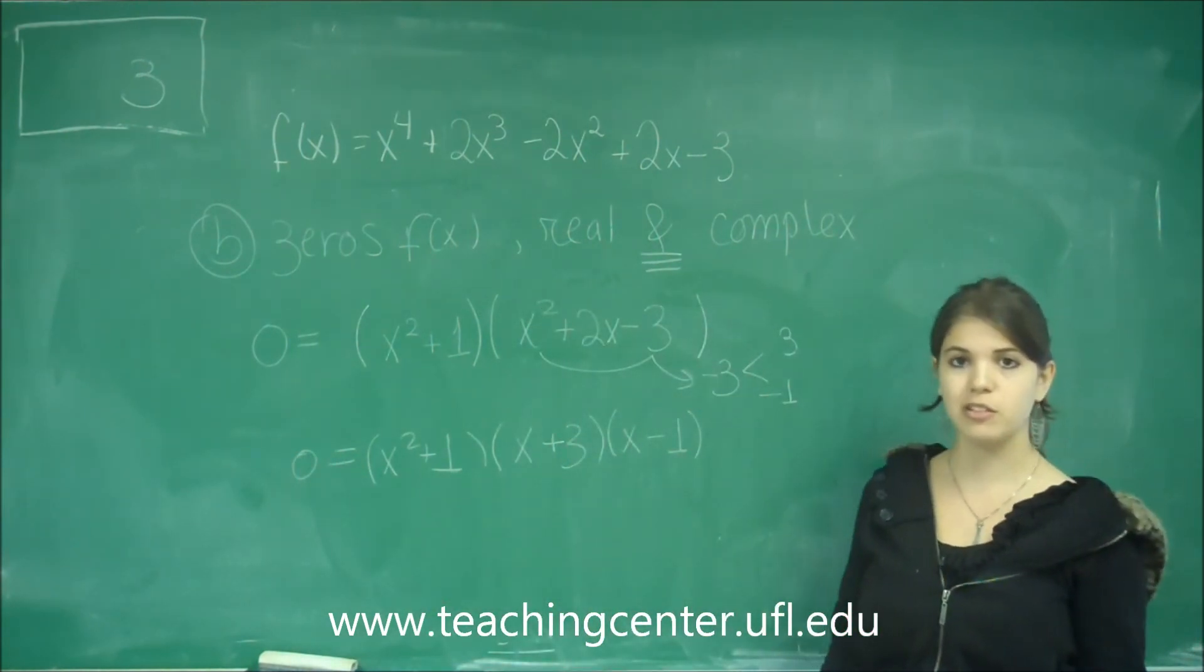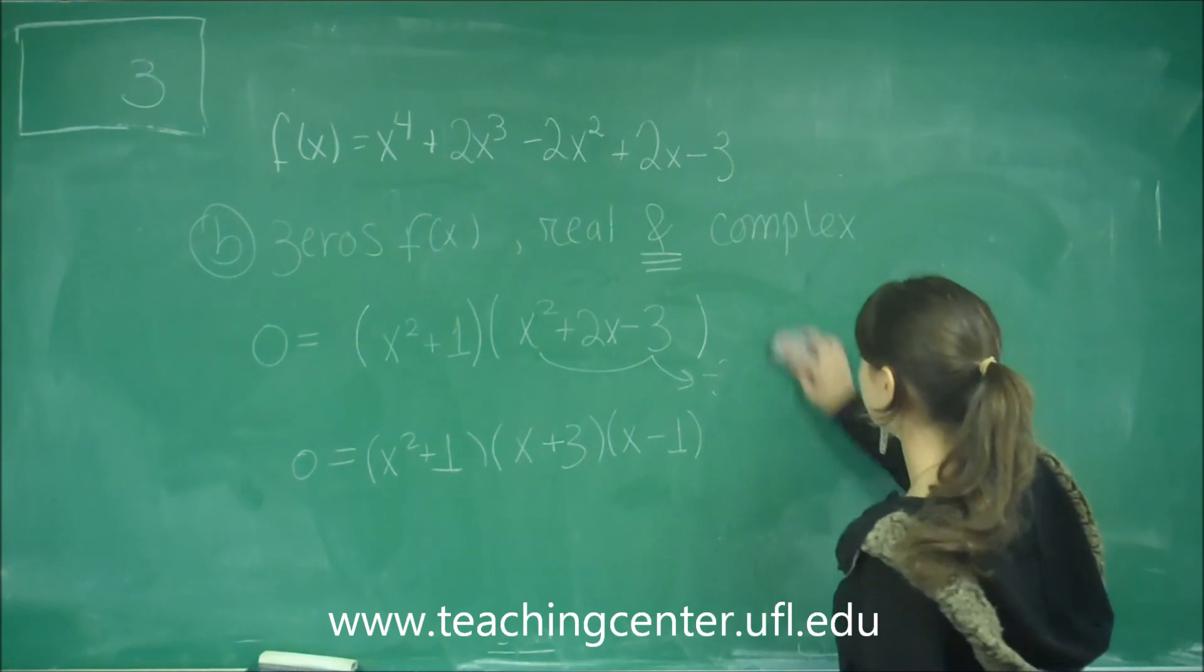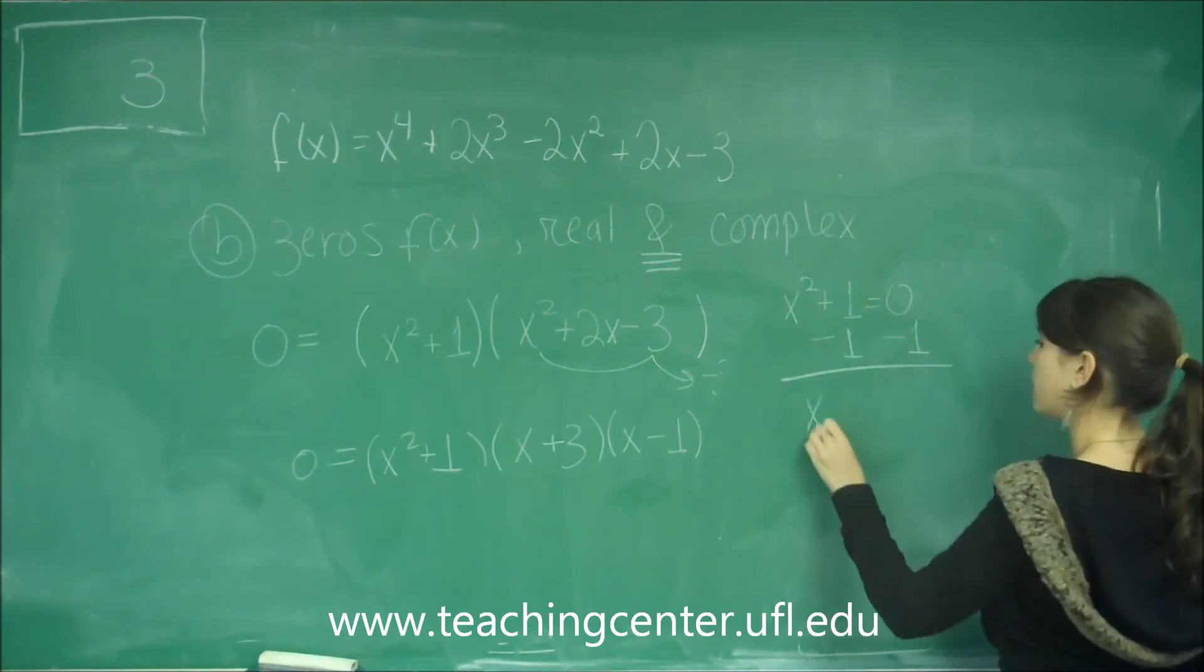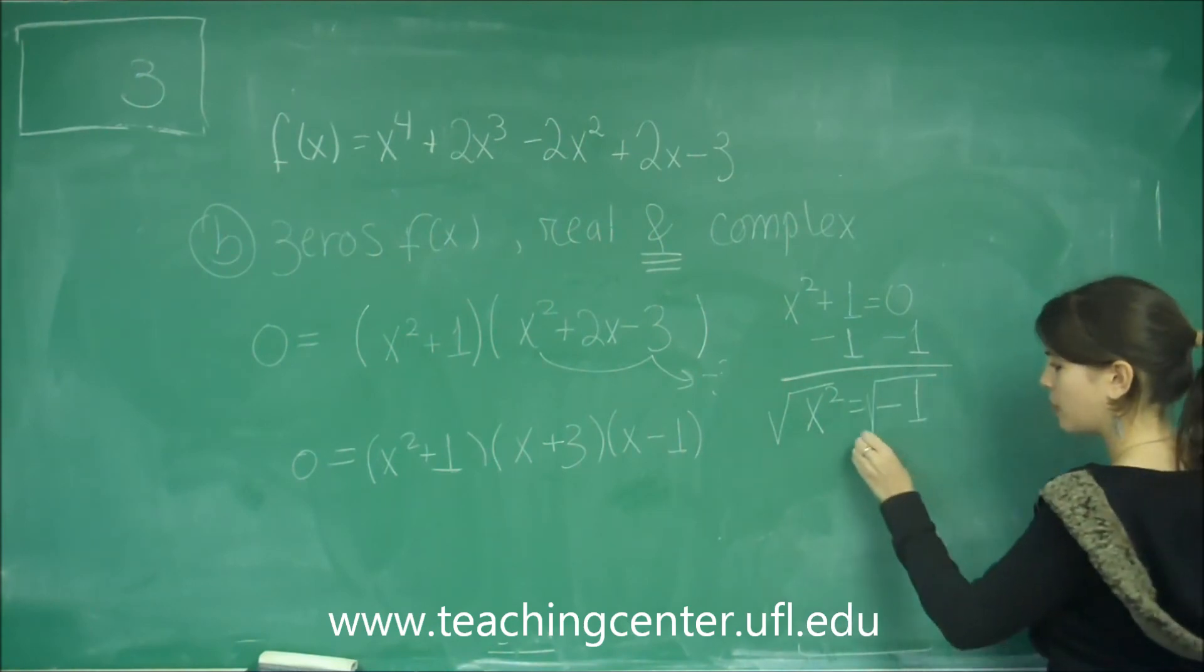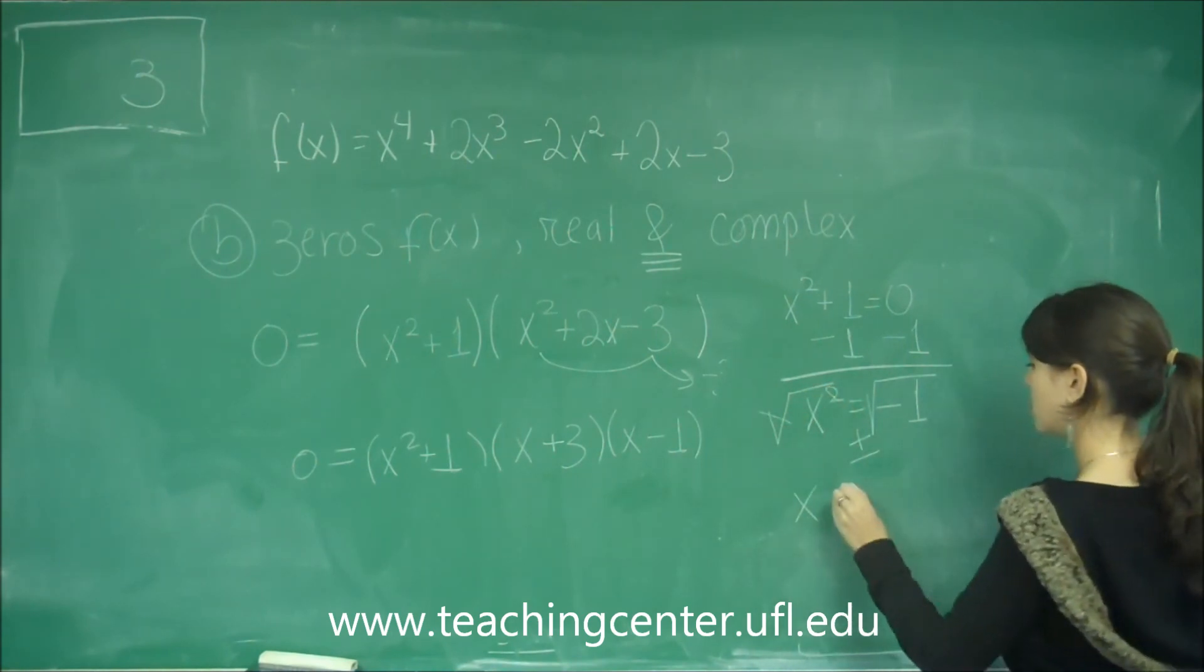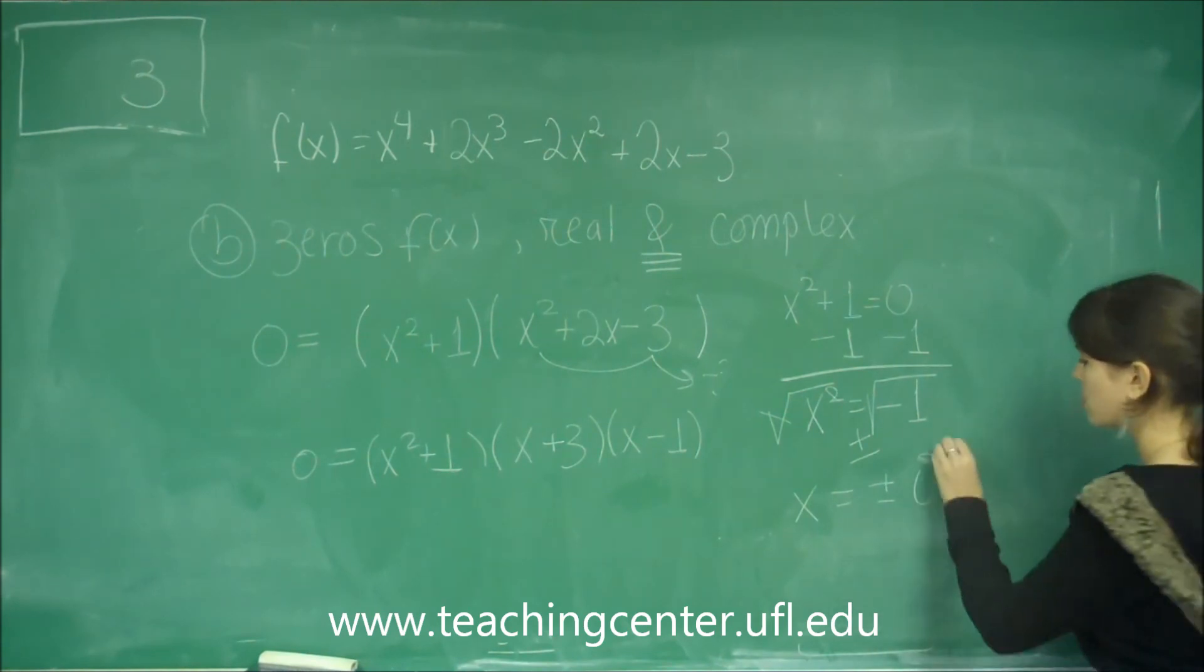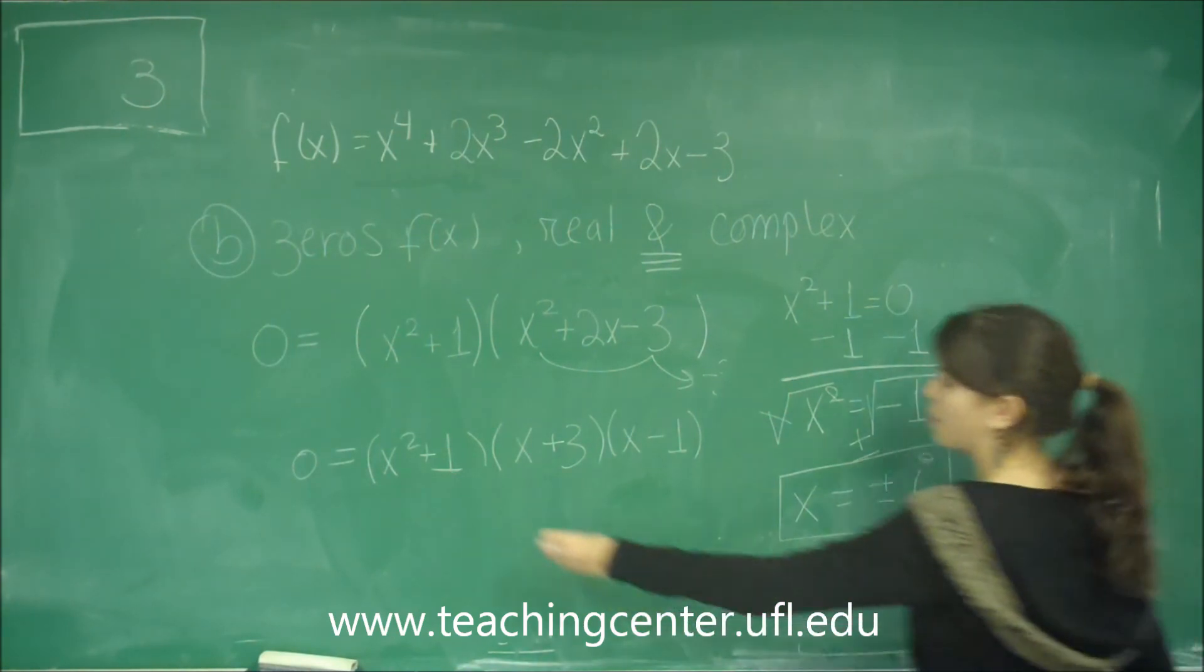To get the zeros, the final thing to do is to set each one of these equal to 0. So let's set the first one equal to 0. We have x squared plus 1 equals to 0. We're going to subtract 1 from each side to get x squared equals negative 1. And now we're going to get the square root of both sides. Remember to write this as plus and minus. Whenever you take a square root, this will cancel to give me x. And then I get plus and minus square root of negative 1, which is the definition of the complex number i. So this is one of the solutions, x equals plus and minus i. So that's from this one here.